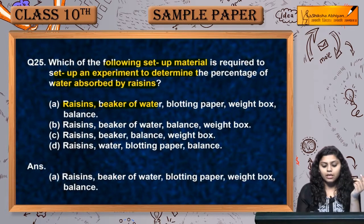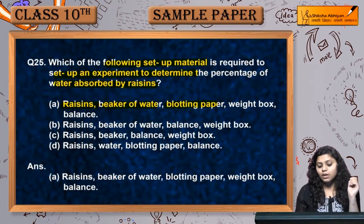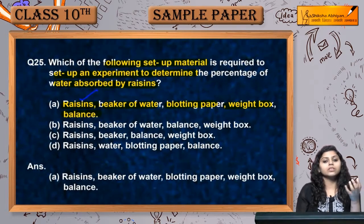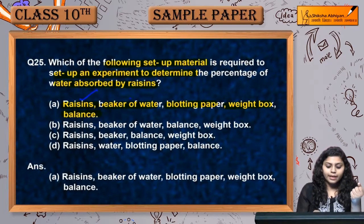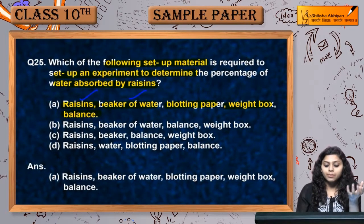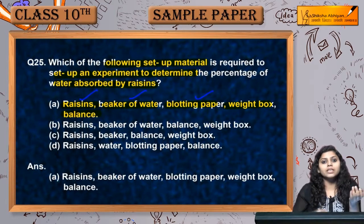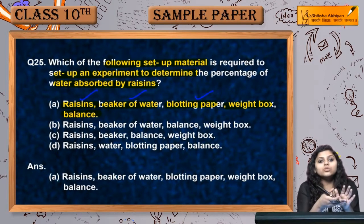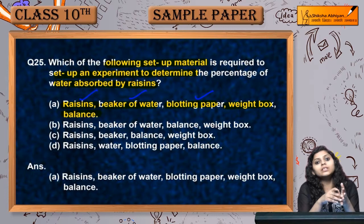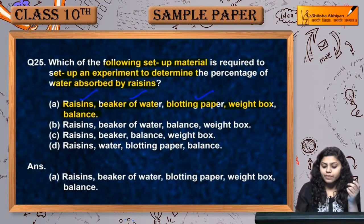Weight balance or box - same thing. Toh hame raisins chahiye kyunki unko toh dekhenge ki kitna pani unhone absorb kiya hai. Beaker of water chahiye - pani kis mein rakhenge, beaker mein rakhenge. Blotting paper chahiye - excess jo water hai woh kaisi saaf karna hai, with blotting paper se remove karna hai. Weight box - wazan karne ke liye chahiye.